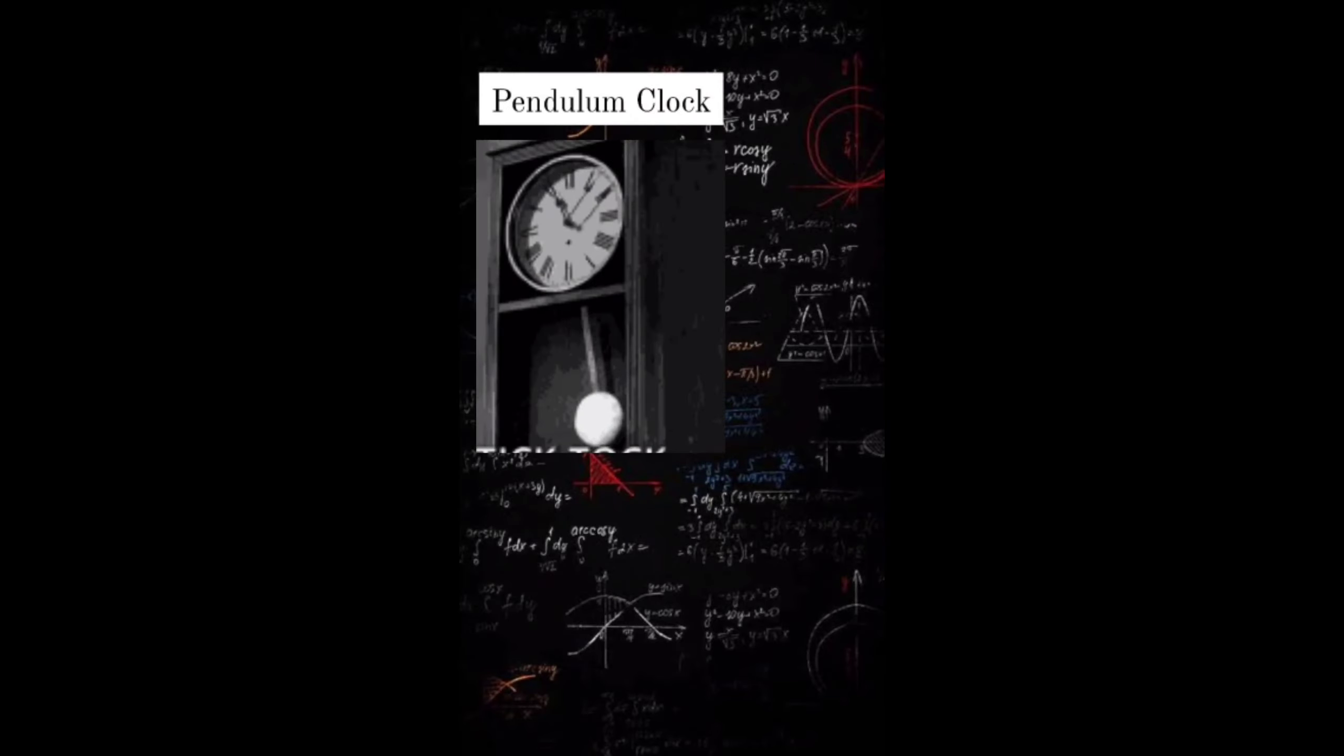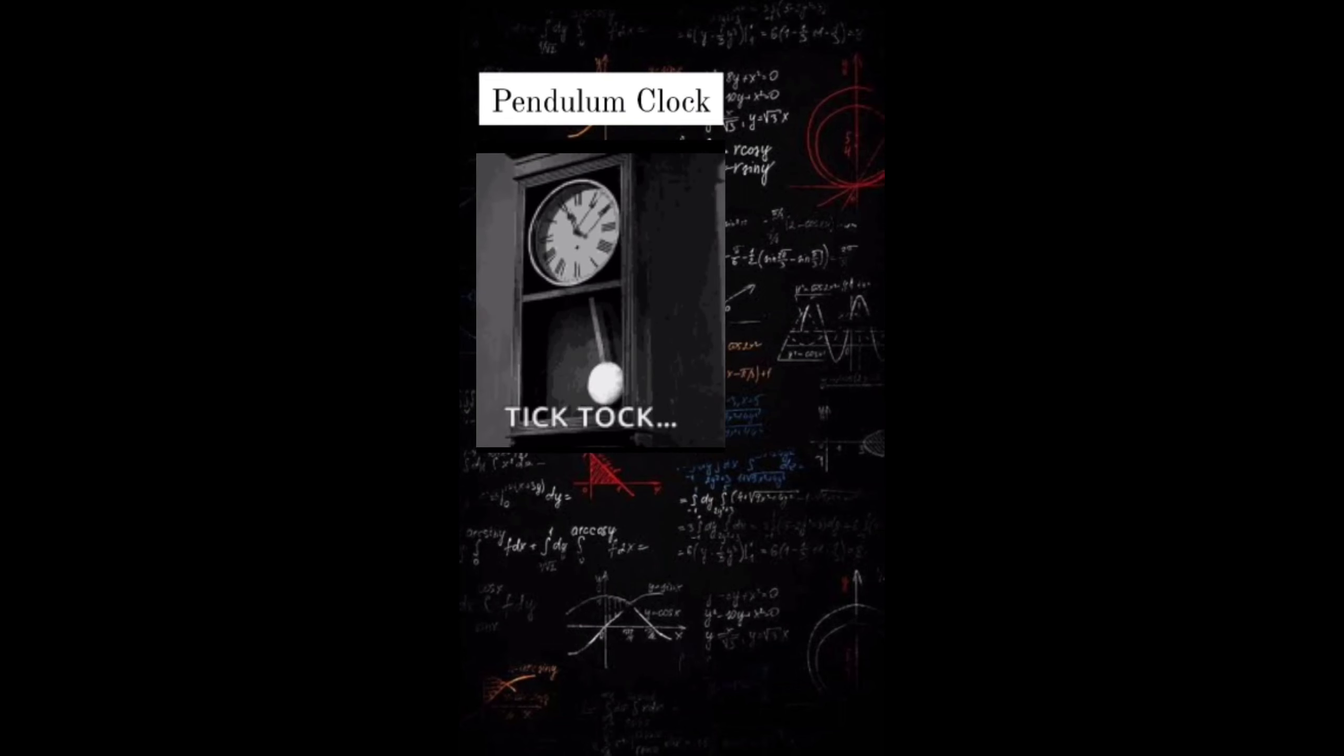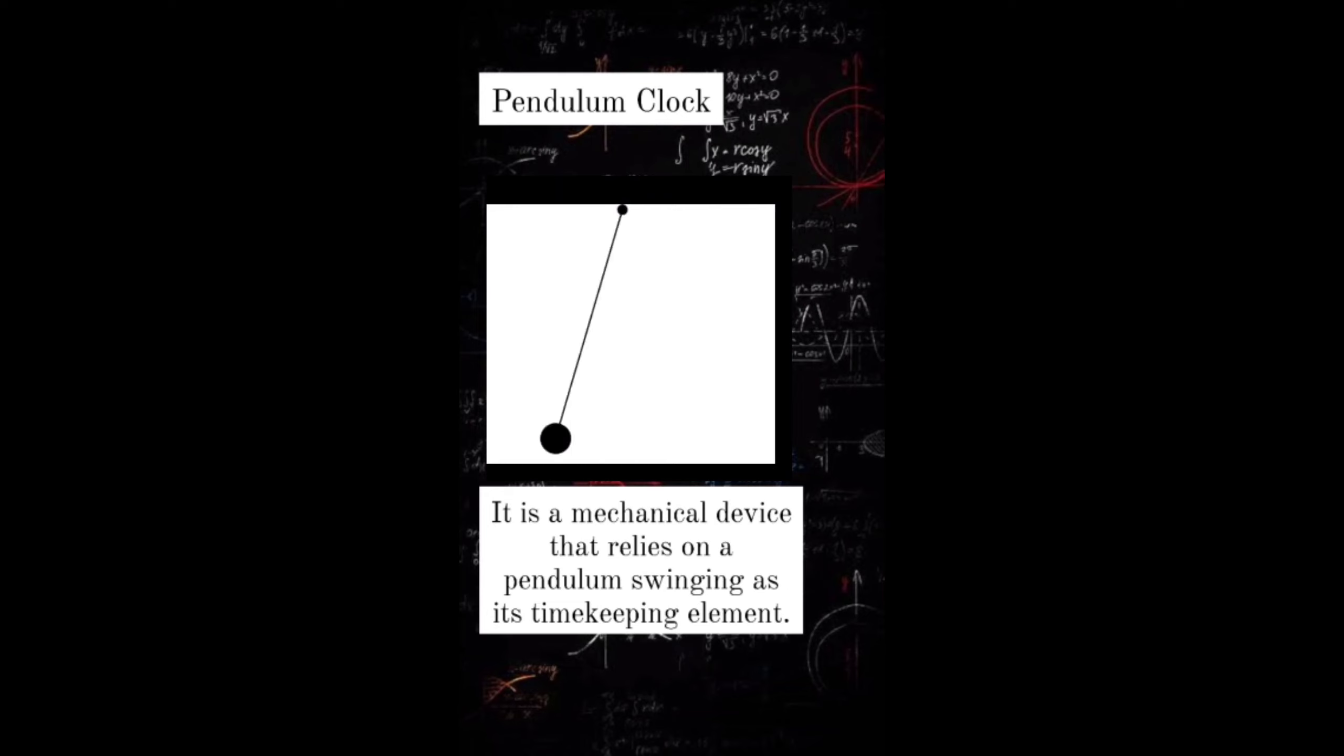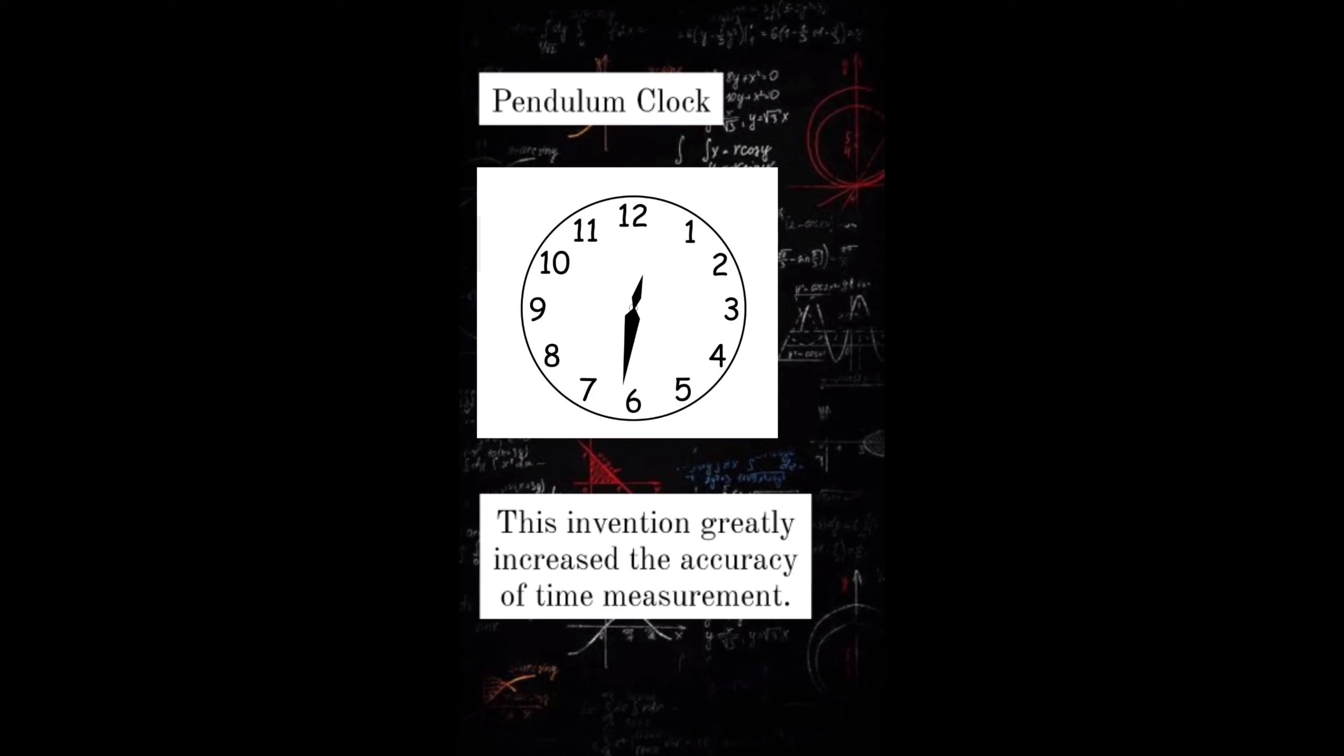This is a pendulum clock. It is a mechanical device that relies on a pendulum swinging as its timekeeping element. This invention greatly increased the accuracy of time measurement.